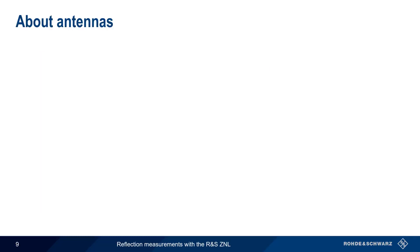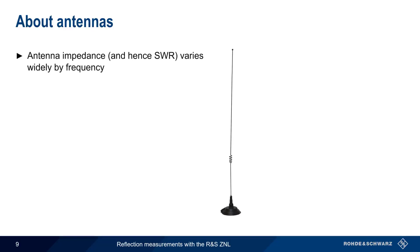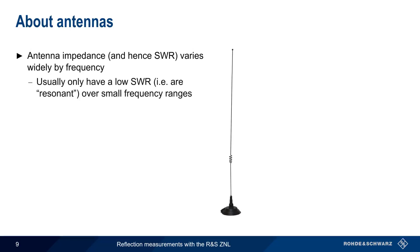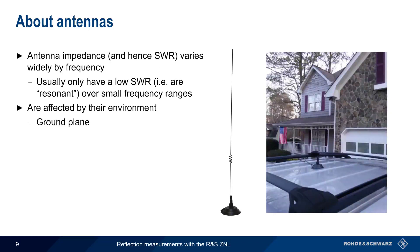The next example involves testing an antenna. An antenna is almost the opposite of a dummy load in terms of its behavior — the impedance of an antenna, and hence its SWR, varies widely by frequency. Most antennas have a low SWR only over a small frequency range. When we say that an antenna is resonant at a certain frequency, this means that it has low SWR at that frequency. Antennas, unlike dummy loads, can also be strongly affected by their environment. For example, many antennas require some type of ground plane to function properly, and the impedance is also affected by nearby objects, even when they aren't directly touching the antenna. Our mag-mount antenna in this example is supposed to be resonant at both 144 and 440 MHz.